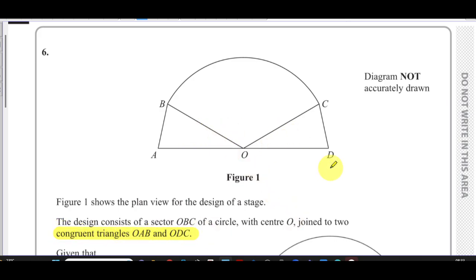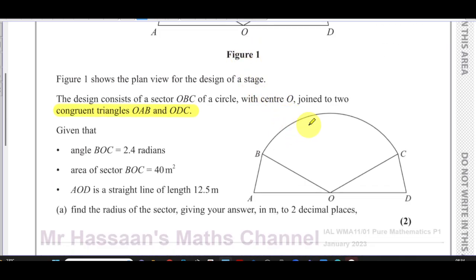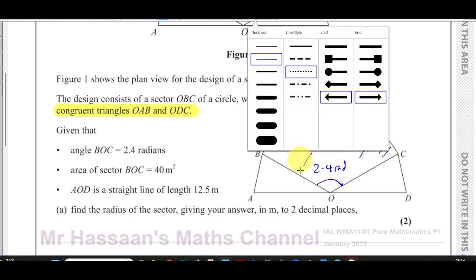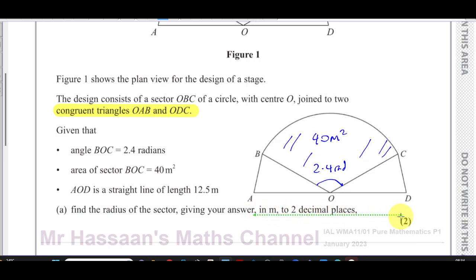Given that angle BOC equals 2.4 radians — I've got a copy of the diagram here — so that angle is 2.4 radians. The area of sector BOC is 40 metres squared. AOD is a straight line of length 12.5 metres, so from A to D is 12.5 metres. That means OA is half of 12.5, which is 6.25 metres.